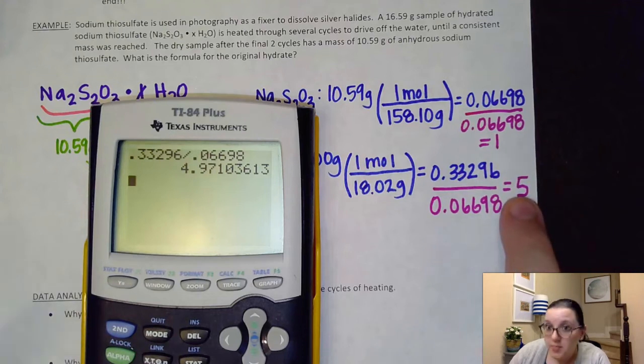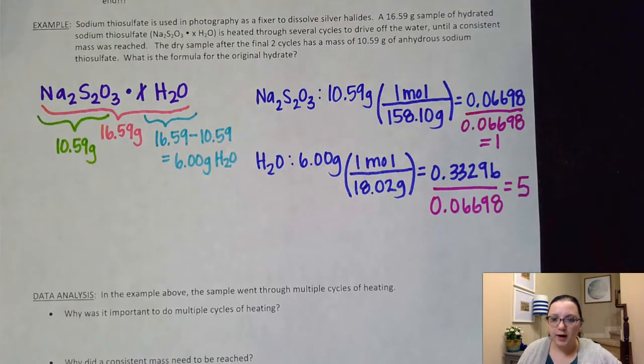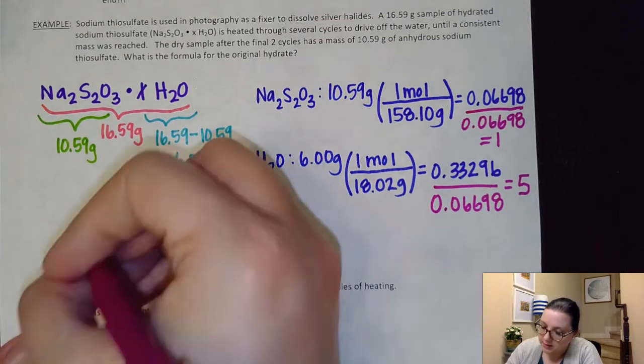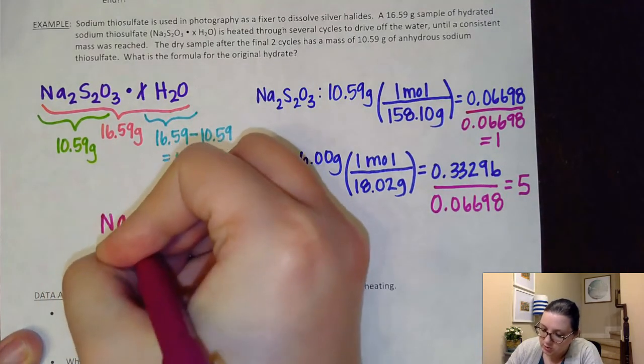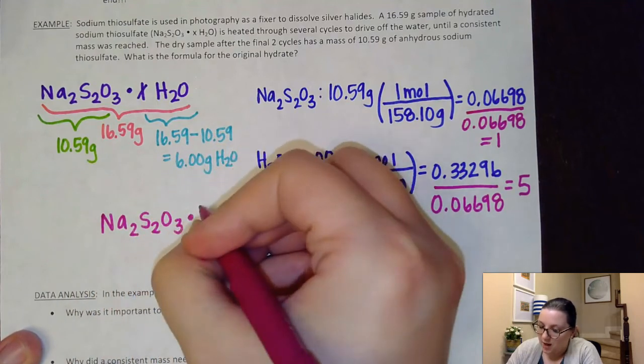All right, so what that means is that my compound is Na2S2O3 with five waters.